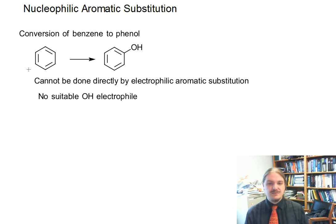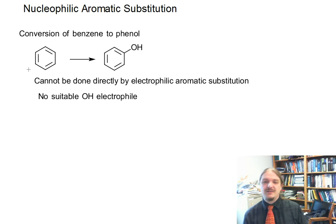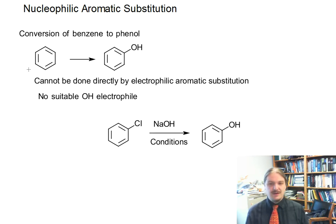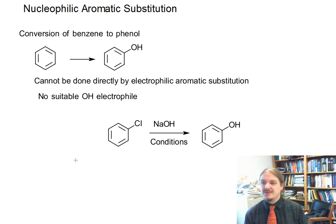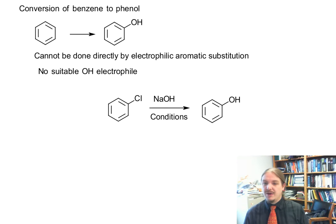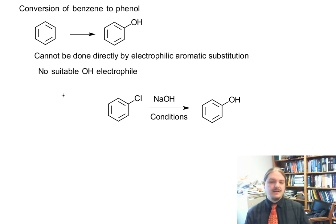There's no convenient, suitable OH electrophile source. And so this reaction, there's just no way that this is going to work out. However, that's not to say you can't do this conversion, but you're going to need an intermediate compound. OH is much more associated with hydroxide as a nucleophile. So if we have a leaving group like chlorine on the aromatic ring, we can do some sort of nucleophilic substitution and get phenol out.